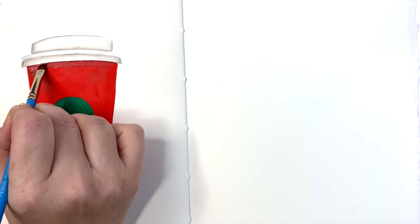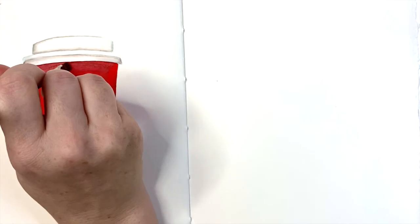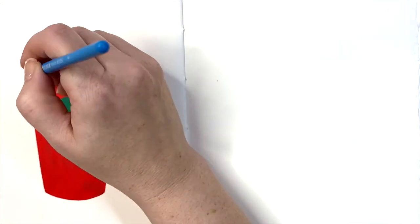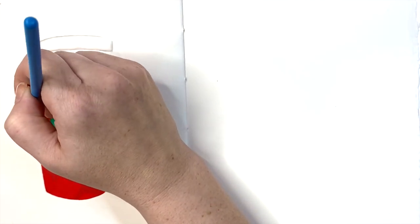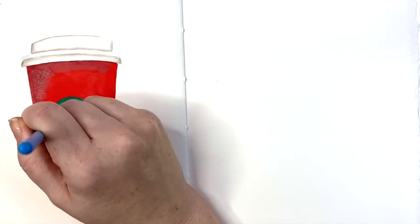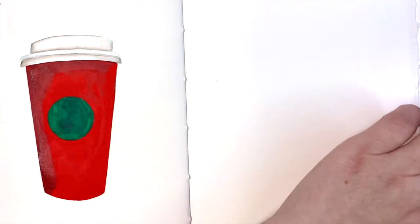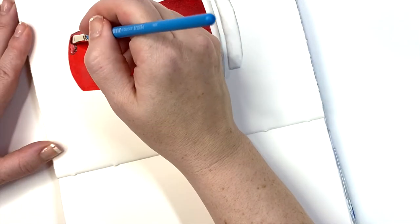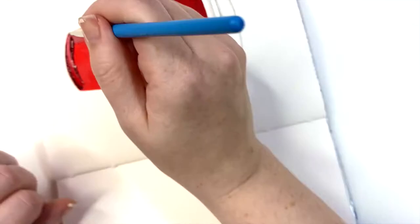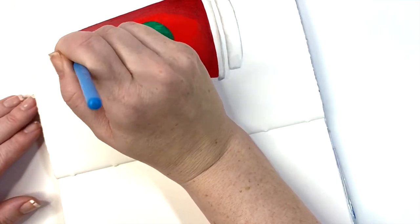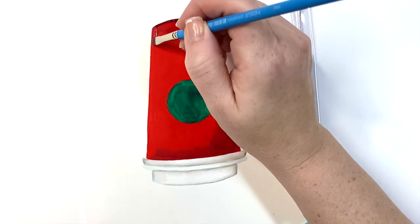Coming back in now with that dark red. I haven't mixed anything. The dark red is a little bit transparent and I'm laying it straight on top of my bright red. I'm going where my shadows would be, under my cup lid and definitely along the left side of my cup, then the bottom. I'm blending this out into the middle of the cup so that just the edges appear dark.